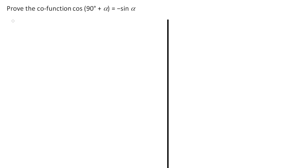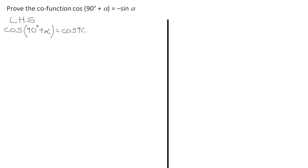We will now watch a video. Here we have another proof of a co-function identity: cos(90° + α) = −sin α. As with all proofs, we start by writing down our left-hand side: LHS = cos(90° + α). This is a compound angle, and with the aid of formula number 11 on the formula sheet, we expand it to get: cos 90° · cos α − sin 90° · sin α.